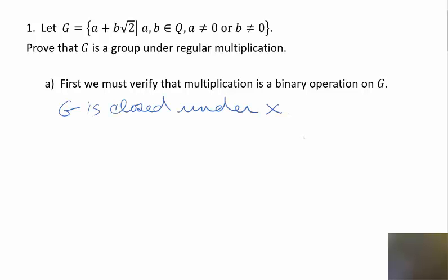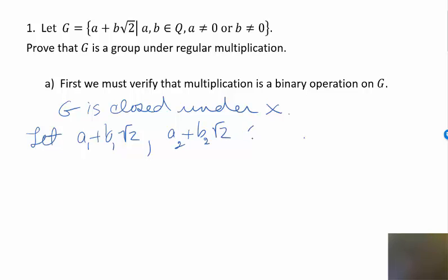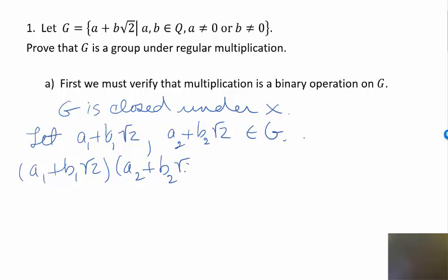To do this, let's pick two arbitrary elements of G: let a₁ + b₁√2 and a₂ + b₂√2 be elements of G. Then we want to multiply them together: (a₁ + b₁√2)(a₂ + b₂√2).